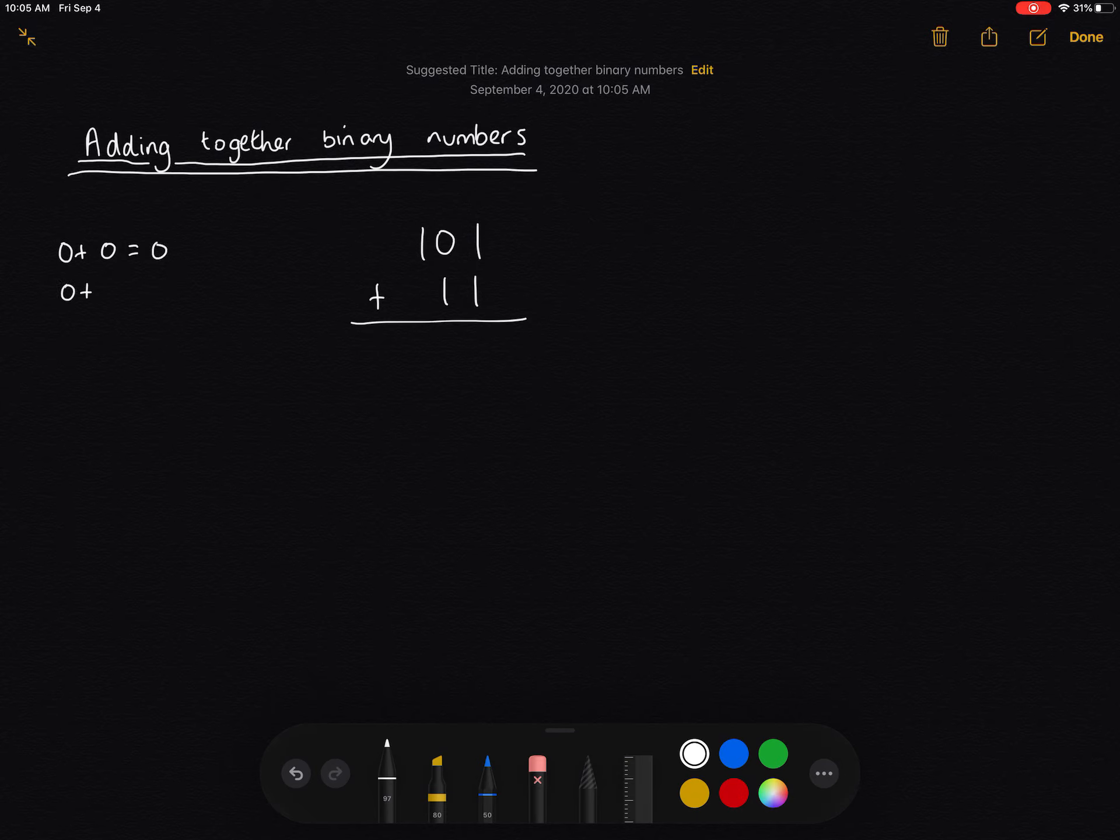Okay, if we do 0 plus 1, then of course that's going to give us 1. Now here's the one that is a little bit tricky to think about. Alright, if we do 1 plus 1, what are we going to get? Alright, so 1 plus 1 is going to give us 1, 0.